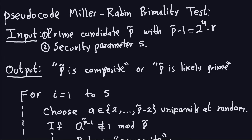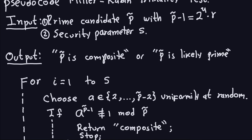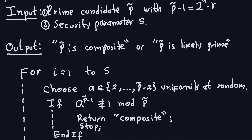Hello and welcome again. In this video, I'm going to give you a couple of examples of small numbers where we're going to test the Miller-Rabin primality test for those specific numbers. Before I go into that, let's just look again at this pseudocode here.